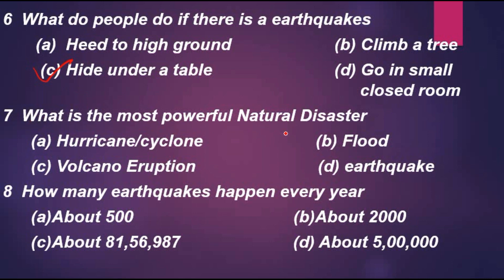Question 7: What is the most powerful natural disaster? Option A: hurricanes or cyclone. Option B: flood. Option C: volcano eruption. Option D: earthquake. The right answer is option D, earthquake.